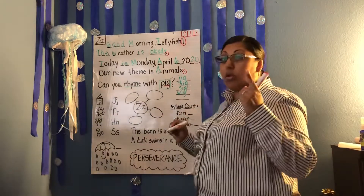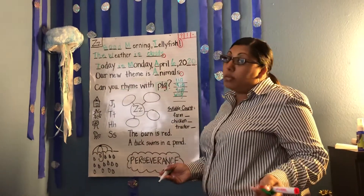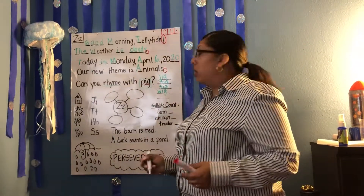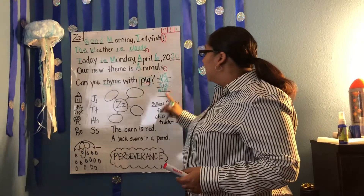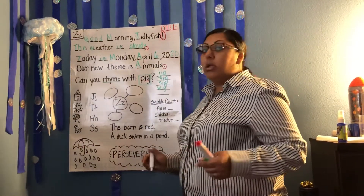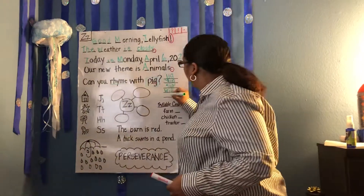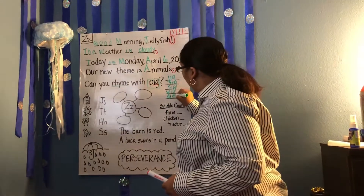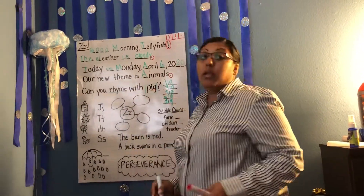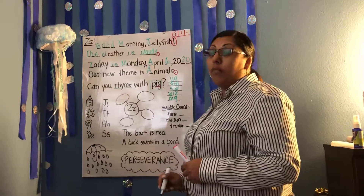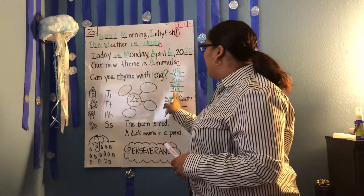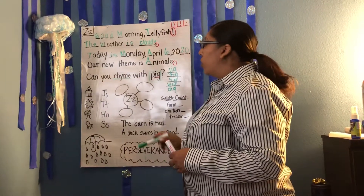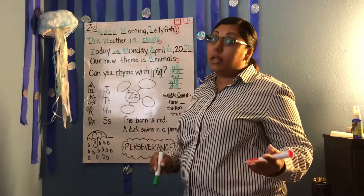We have one more, boys and girls. Can you think of something else that ends with the rhyming sound ig? Pig, jig, fig, sig, wig. Duh-duh-ig. What letter makes that sound? The letter D. Dig. Does that rhyme with pig? Yes, it does. You're correct — give yourself a hand clap. Pig and dig. Good job, boys and girls. And those are rhyming words — words that have the same ending sound.